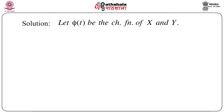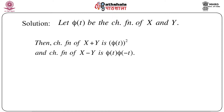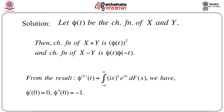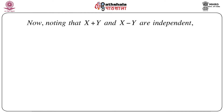The solution follows the path of characteristic functions. Let φ(t) be the characteristic function of X and Y — since they have identical distribution, φ(t) is the characteristic function of both. The characteristic function of X+Y is φ(t)^2, and the characteristic function of X-Y is φ(t)·φ(-t). We know that the k-th order derivative of φ(t) gives φ^(k)(0) involving moments, and from the conditions: φ'(0) = 0 and φ''(0) = -1.